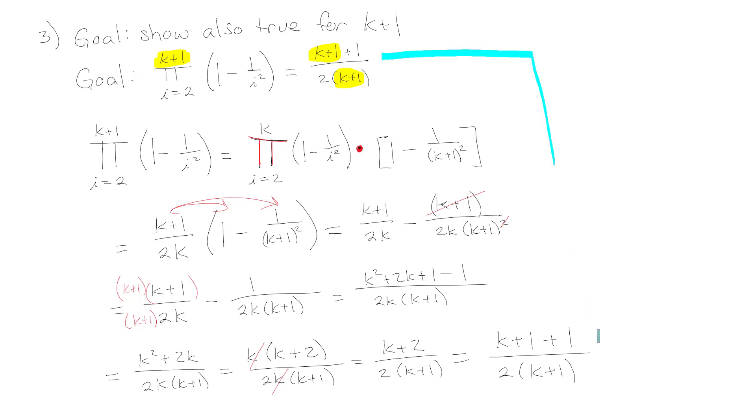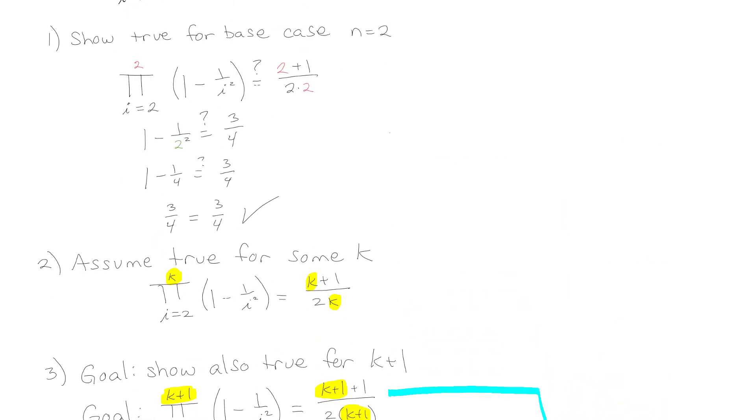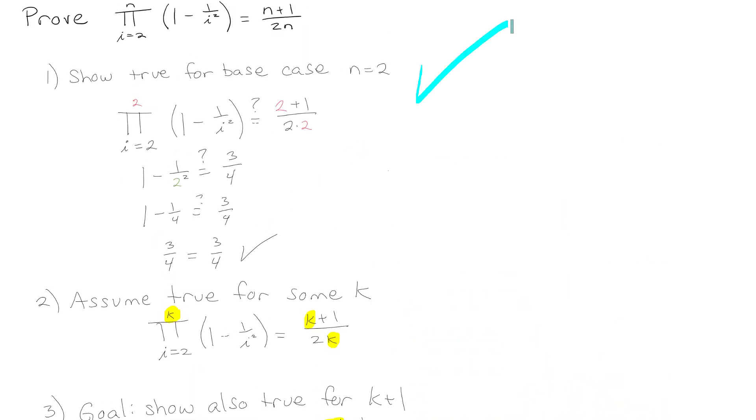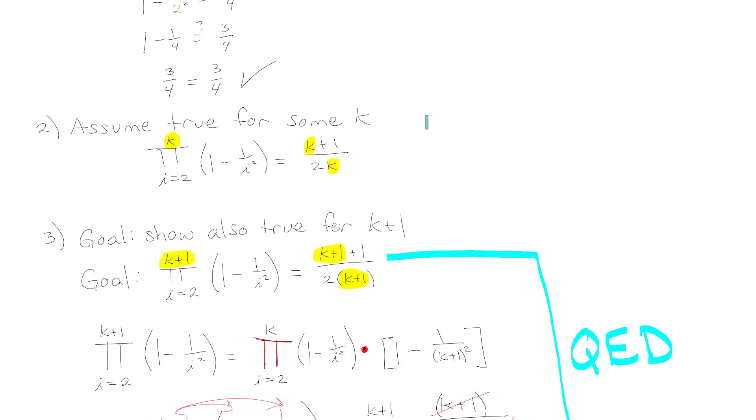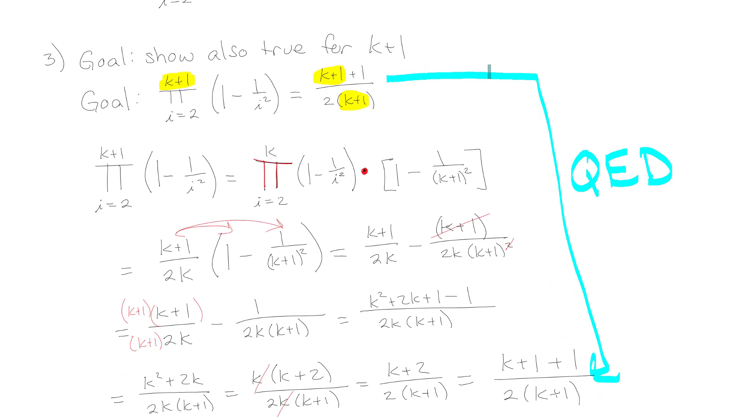So now that my goal matches what I got, I can go ahead and write QED, which means end of proof. What you're doing is you're going to start by proving it for some kind of base case. Then if you assume it's true for some k, then it also has to be true for all k plus 1 that follow. That's kind of how you're going to do that.